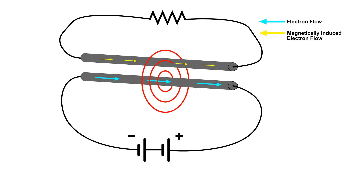Now I have taken out one of the batteries and the magnetic field starts to collapse. The magnetic field is now moving in the other direction. Notice the current flow in the upper wire.